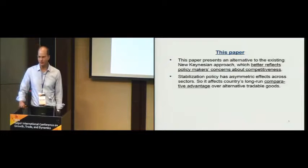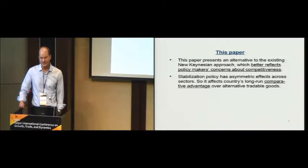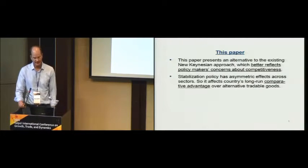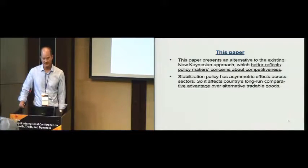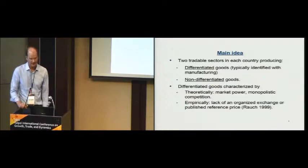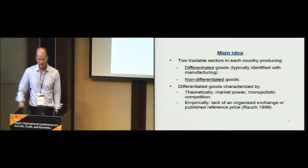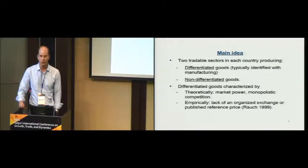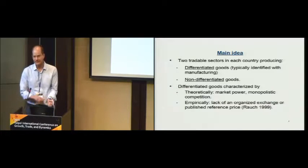This paper proposes a different way of thinking about the effect of monetary policy on competitiveness, in a way that better reflects the valid concerns about price competitiveness that a lot of policymakers have. The main idea is that stabilization policy has asymmetric effects across different sectors. If you have multiple traded sectors that are heterogeneous in certain key respects, monetary policy will affect them differently and can alter the long-run comparative advantage of a country between these alternative tradeable goods. The distinction among goods important for this work is between differentiated goods — typically identified with manufacturing — and non-differentiated goods. This is unusual in macroeconomics but completely normal within the trade literature, and this is one way in which we are borrowing ideas and modeling techniques from the trade literature to enhance the ability of macro to talk about trade issues.